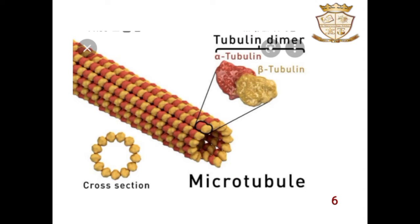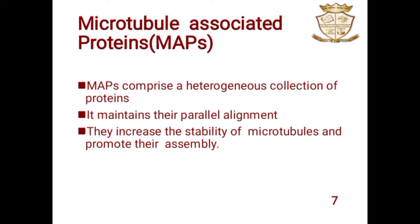In this picture, we can see two subunits — alpha and beta-tubulin — that form a tubulin dimer, and we can see the cross-section of a microtubule. Next, microtubule-associated proteins, shortly called MAPs. MAPs comprise a heterogeneous collection of proteins. They maintain the parallel alignment of the cell and increase the stability of microtubules and promote their assembly.